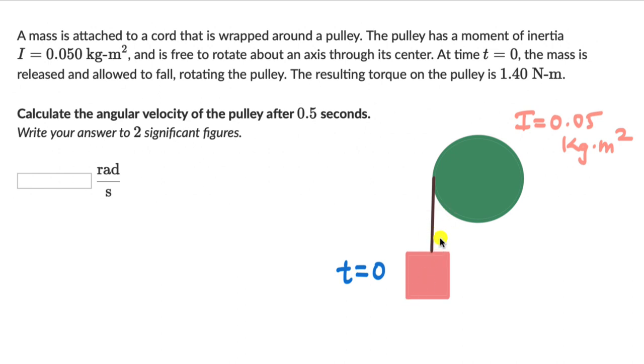When it falls, there is a torque because of the tension force in this string. This torque is 1.40 Newton meters. As a result of this torque, this pulley starts rotating, and we can say that it starts rotating with an angular acceleration of alpha. Because there is a torque, there will be an angular acceleration.